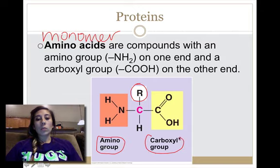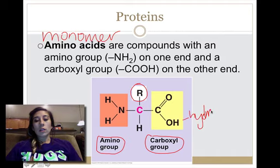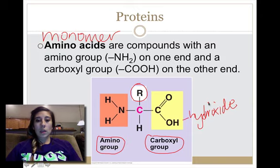And then the carboxyl group, which has a carbon with a double bond to oxygen, and then a bond to what is called hydroxide. And that's what makes up an amino acid.